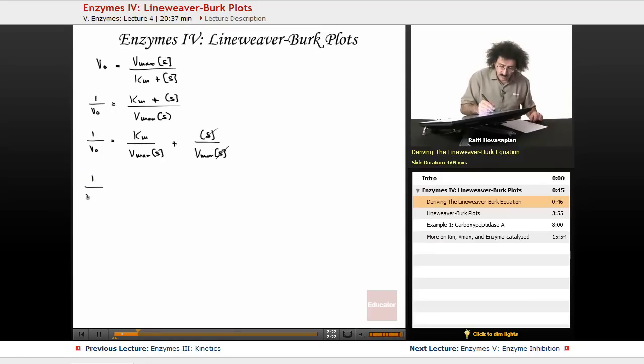So I end up with 1 over V0 equals Km over Vmax times 1 over S plus 1 over Vmax.